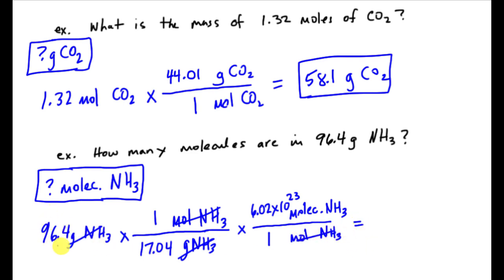So this would be the setup. So I take 96.4, and I divide it by 17, and then I multiply it by Avogadro's number. What I end up with is 3.41 times 10 to the 24. And this would be molecules of NH3.